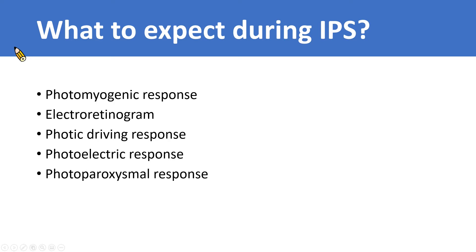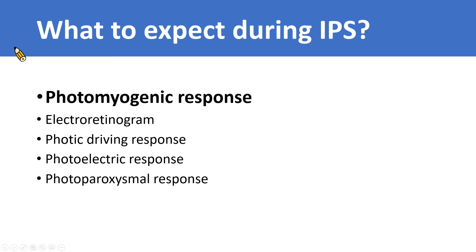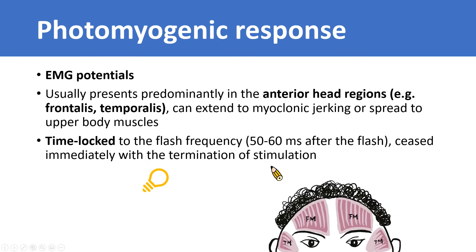After introducing the standard techniques of IPS, I am going to talk about the five main responses we expect to see during IPS recording. First, the photomyogenic response. Photomyogenic response is an EMG potential; therefore, it predominantly occurs in the anterior head region where the frontalis and temporalis muscles are located. In some cases, we can see the photomyogenic response extending to upper body regions and causing generalized jerky movements. The photomyogenic response is time-locked to the flash frequency, occurring about 50 to 60 ms after each flash, and ceasing immediately when the flash terminates.